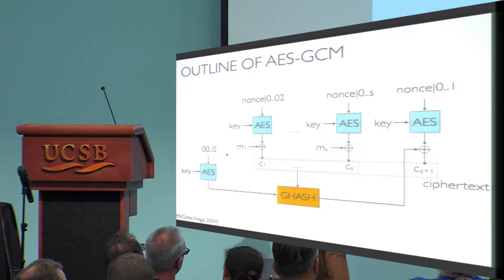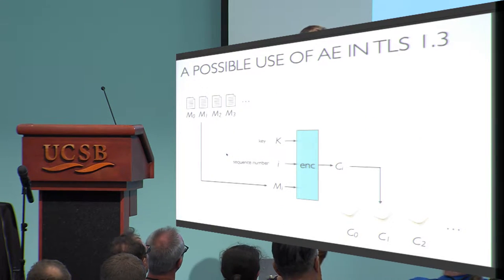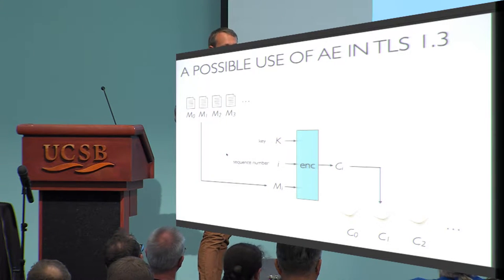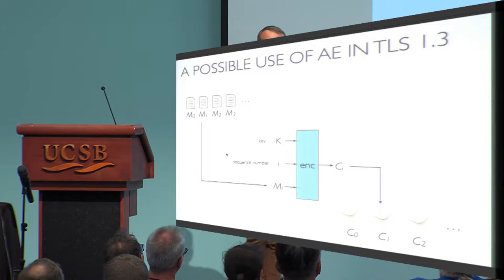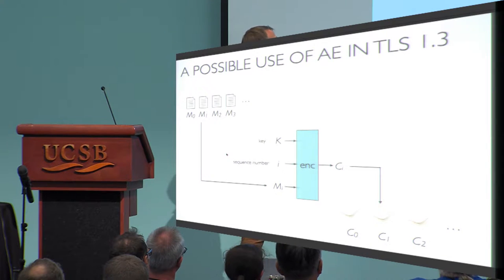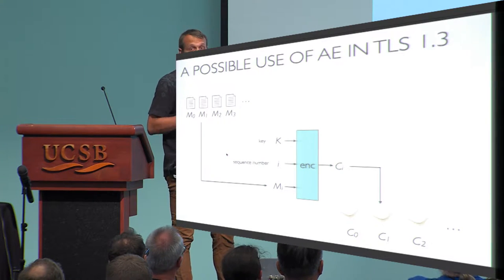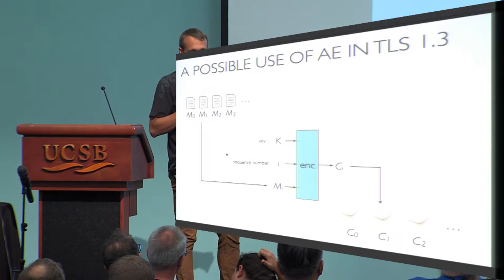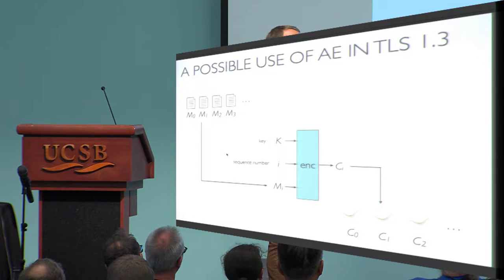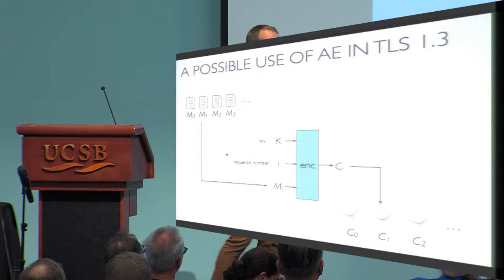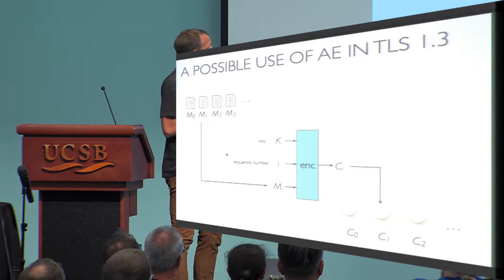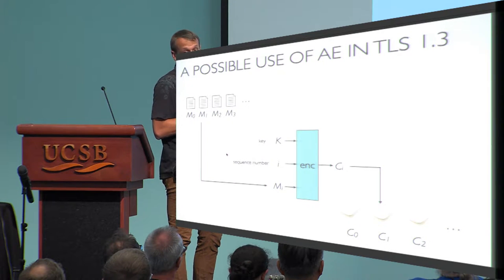How would TLS use authenticated encryption to protect data? There are two directions: client to server and server to client, using completely independent keys, so we can focus on them independently. The goal of TLS is to transmit a sequence of messages — a byte stream — so we use authenticated encryption with the key from the handshake phase, the message, and the sequence number of that particular message.